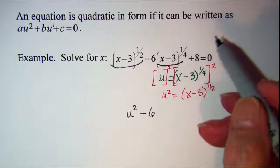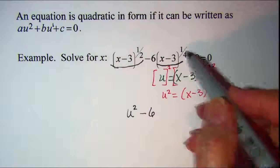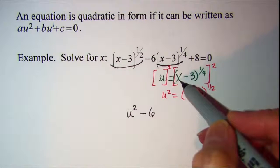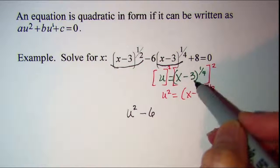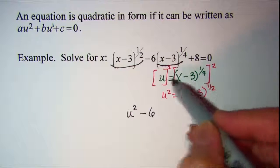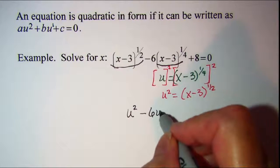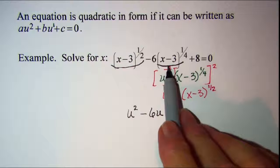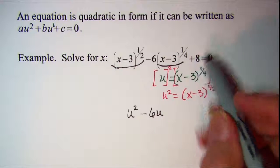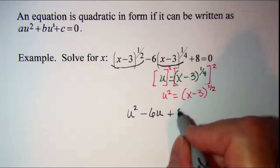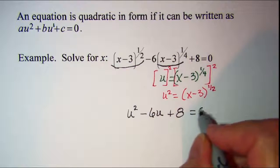And then in place of this factor, x minus three raised to the one-fourth power, we see that x minus three to the one-fourth power, that's in the green here, that's equal to u. So I'm going to put u in and it's in this place. And then continue writing plus eight equals zero.